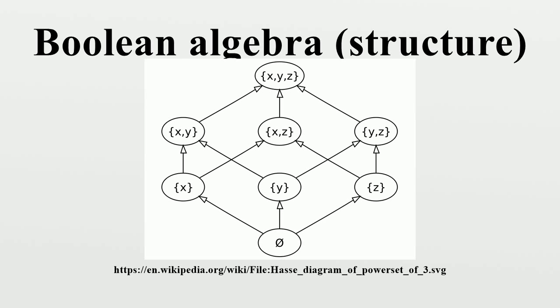The simplest non-trivial Boolean algebra, the two-element Boolean algebra, has only two elements, 0 and 1, and is defined by the rules. It has applications in logic, interpreting 0 as false, 1 as true,